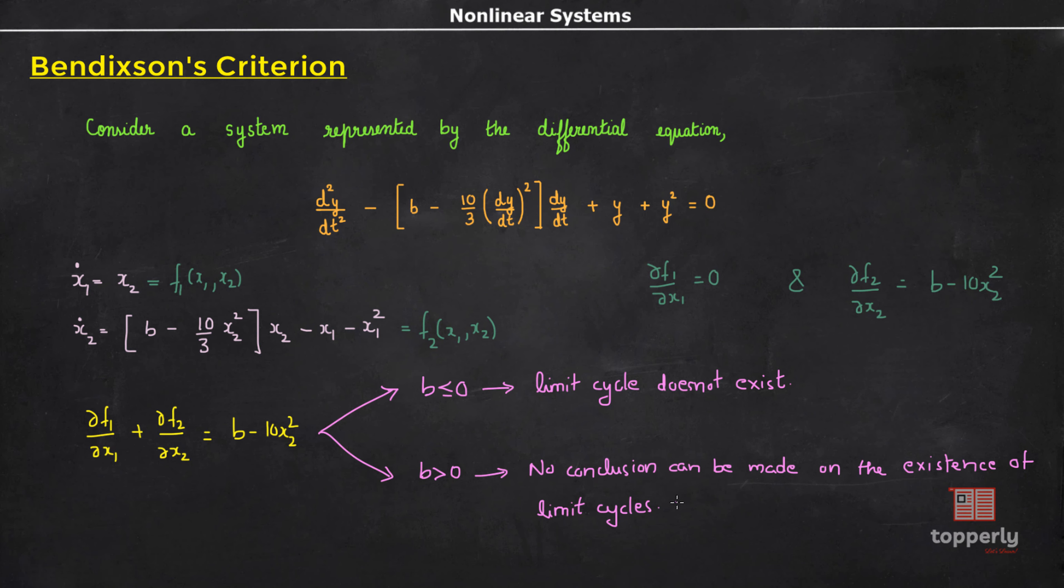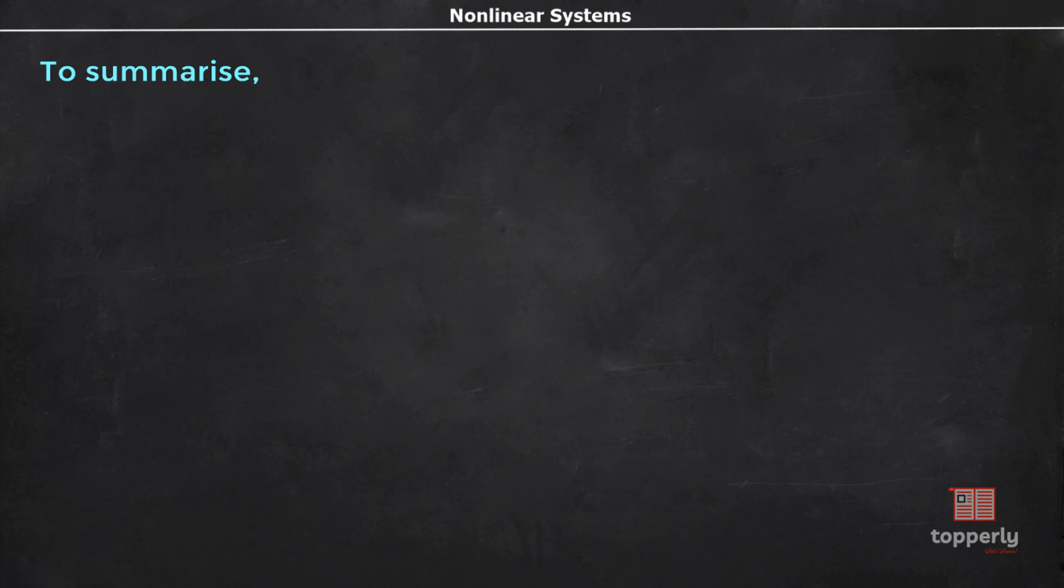Now to summarize, the Poincaré-Bendixson theorem is one of the central results of nonlinear dynamics. It says that the dynamical possibilities in the phase plane are very limited. If a trajectory is confined to a closed bounded region that contains no fixed points, then the trajectory must eventually approach a closed orbit. Nothing more complicated is possible. However, this depends crucially on the two-dimensionality of the plane.